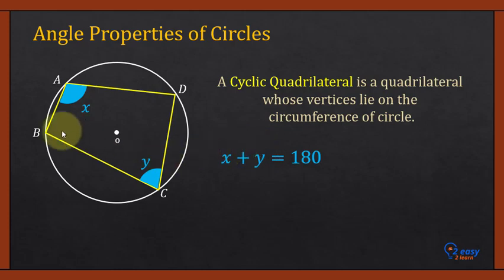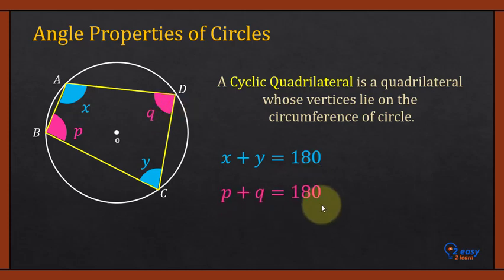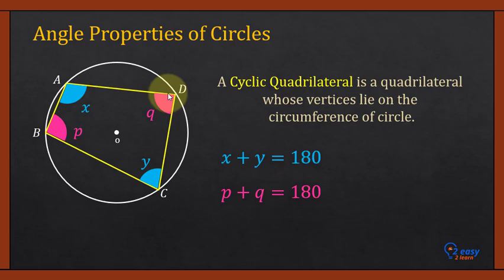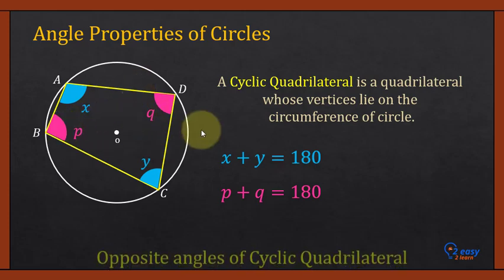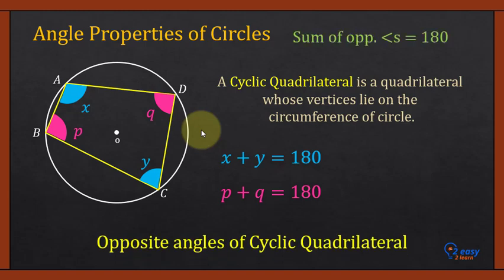Similarly, angle B and angle D, represented by p and q, are opposite angles, so p plus q equals 180 degrees. The approach is simple: first identify the cyclic quadrilateral in the question, then if one angle is given, subtract it from 180 degrees to find the opposite angle.